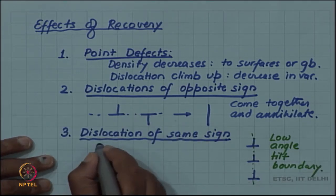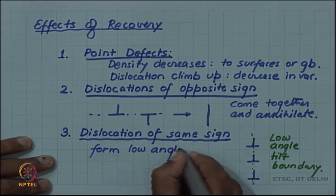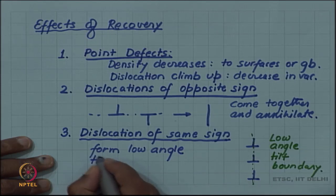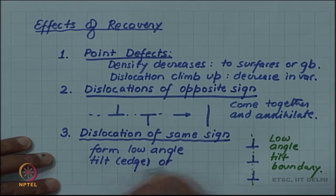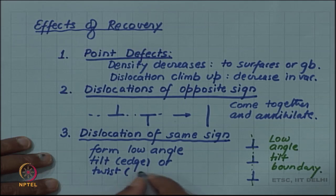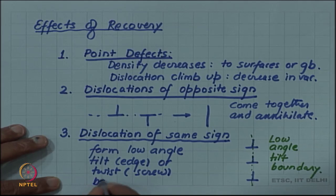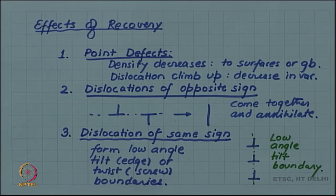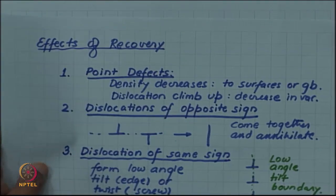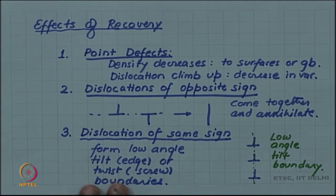Dislocations of same sign form low angle tilt for edge dislocation, or twist for screw dislocation boundary. This reduces the strain and this is what helps in the recovery of electrical property, the electrical conductivity which we discussed in the introduction to annealing process.